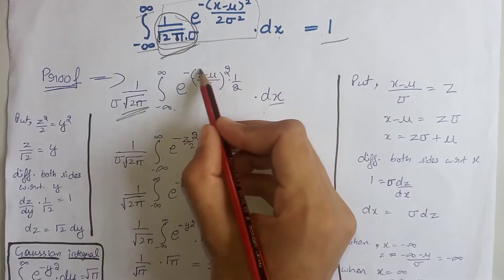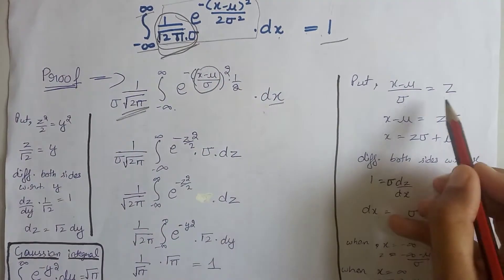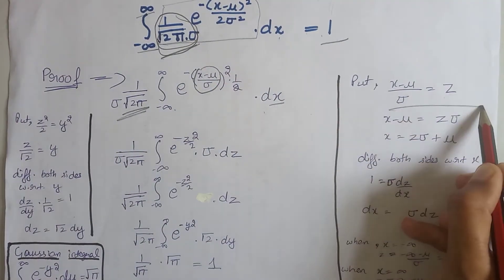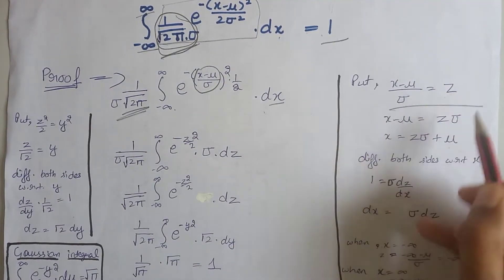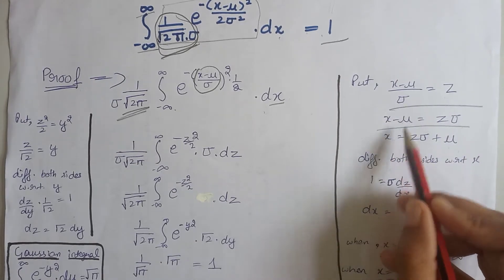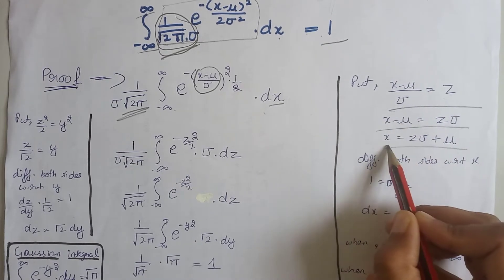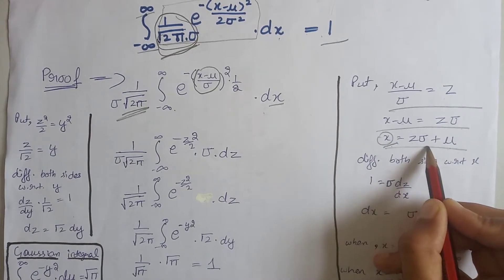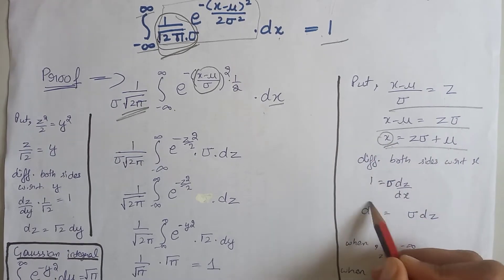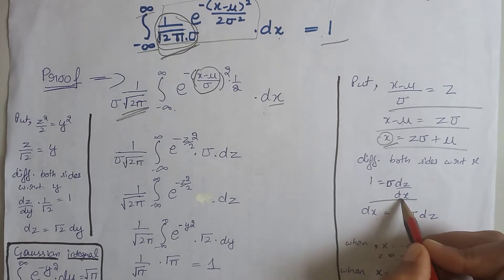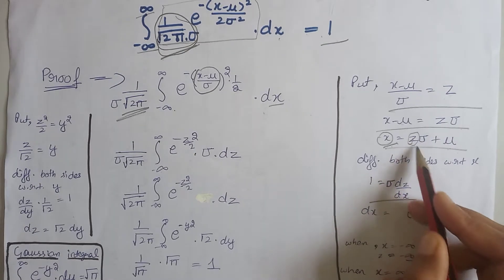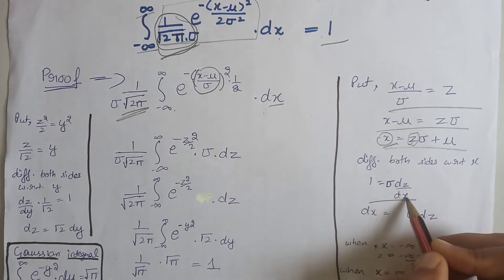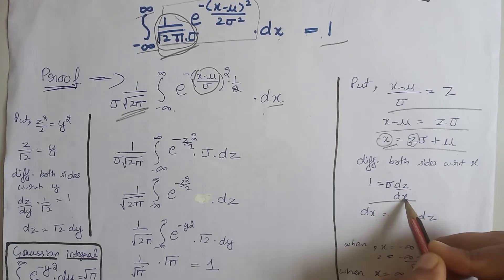Next, we will substitute this term as z, then taking sigma to this side. After that, taking mu to this side, we get the value of x. Now we will differentiate both sides with respect to x. Since this term contains only z, we have to write dz/dx because we are differentiating with respect to x.